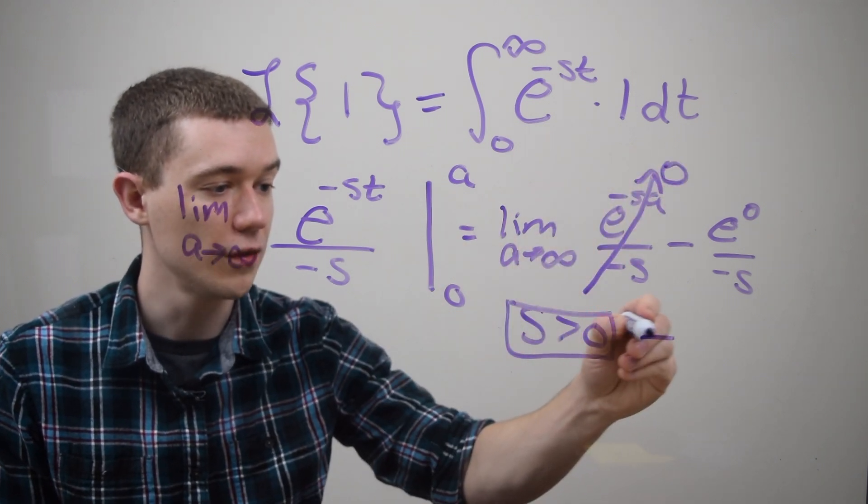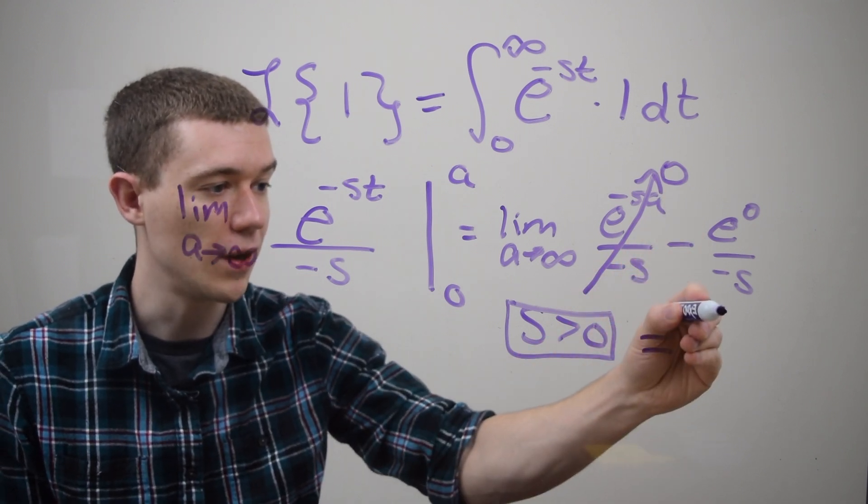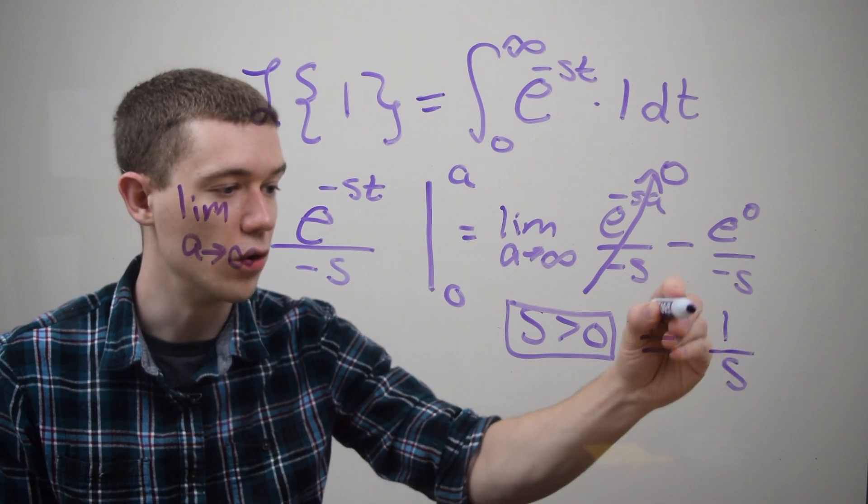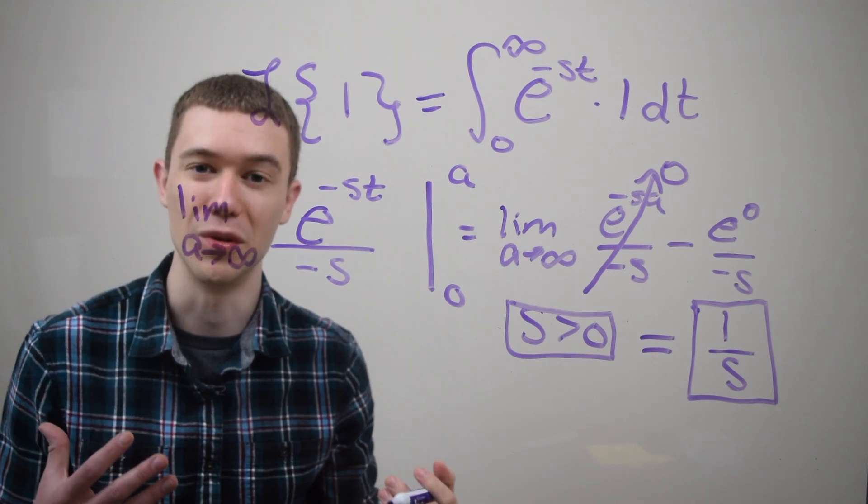So what are we left with? Well e to the 0 is 1, and I get minus a minus would be a plus, so our answer is 1 over s, which is what you would get if you looked on a Laplace transforms table.